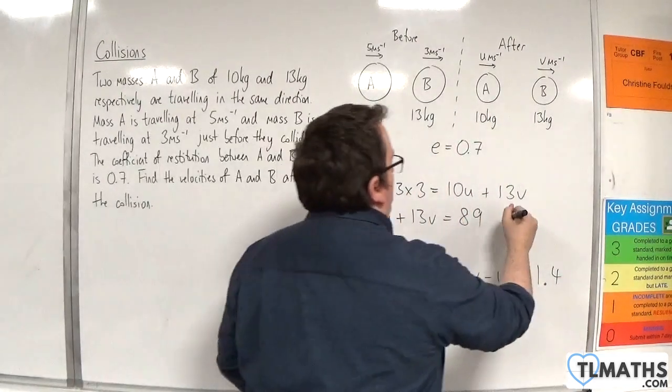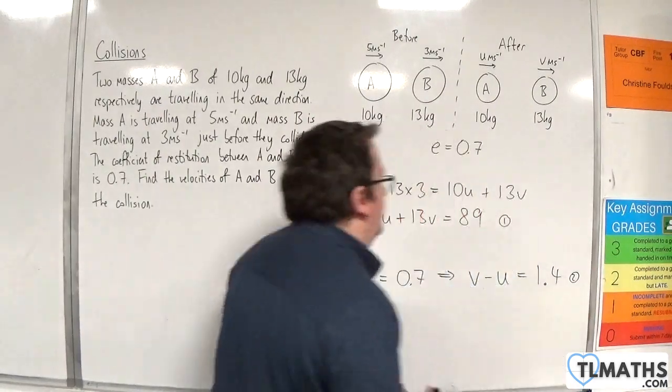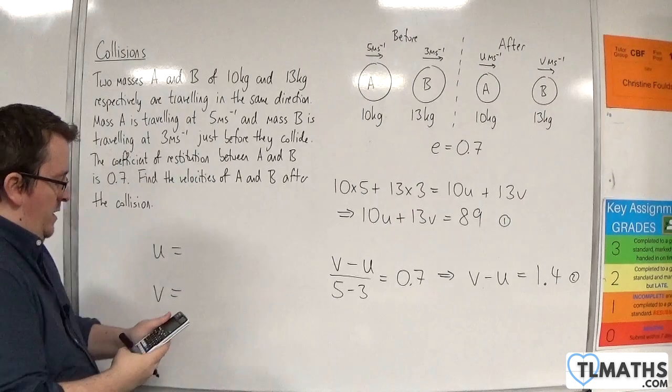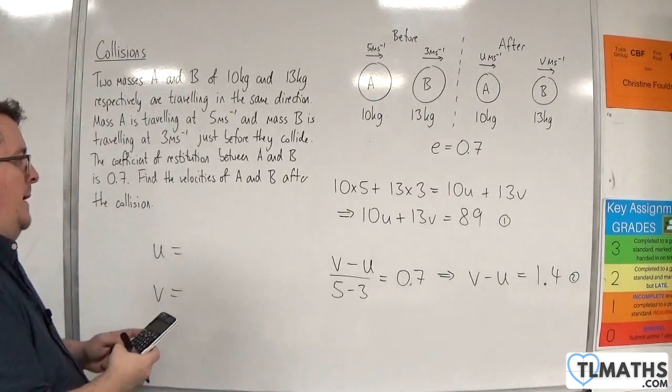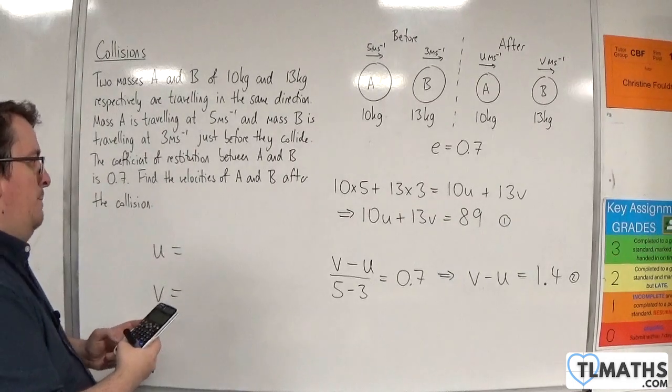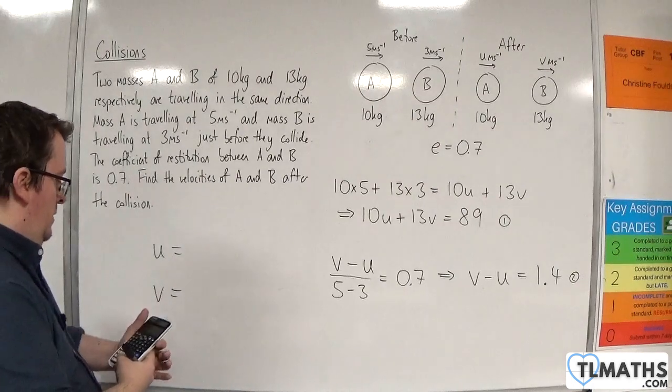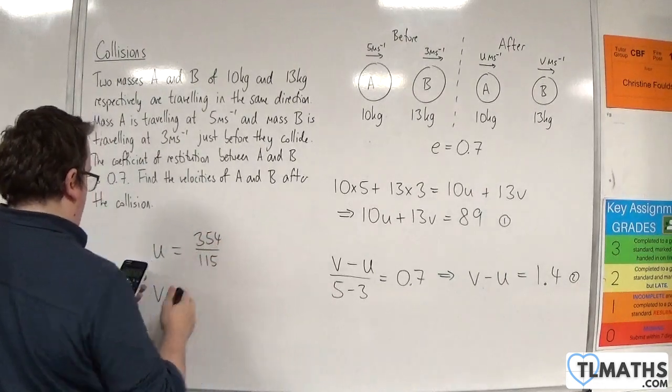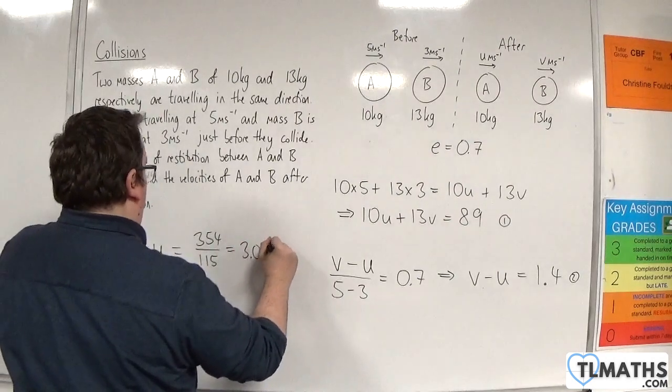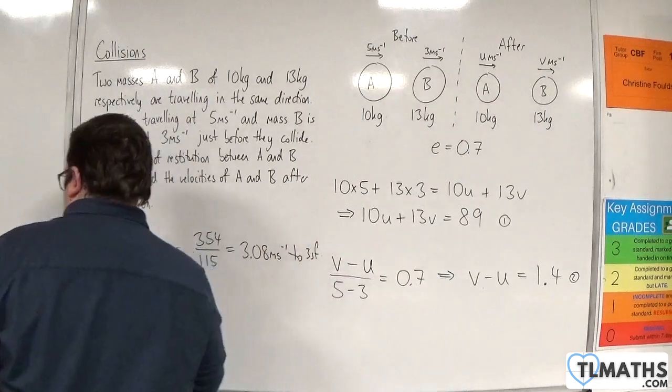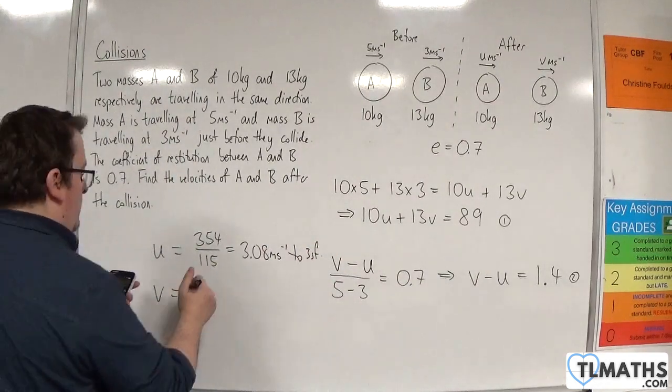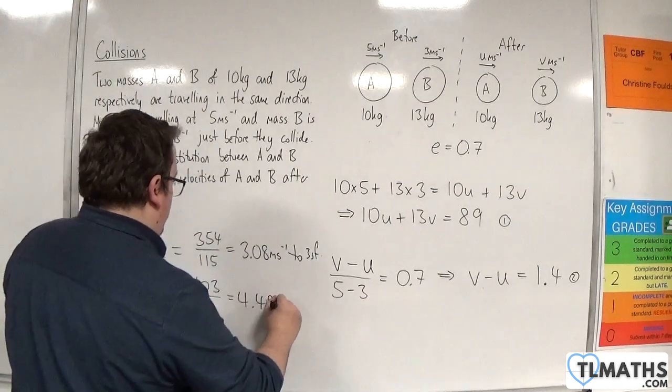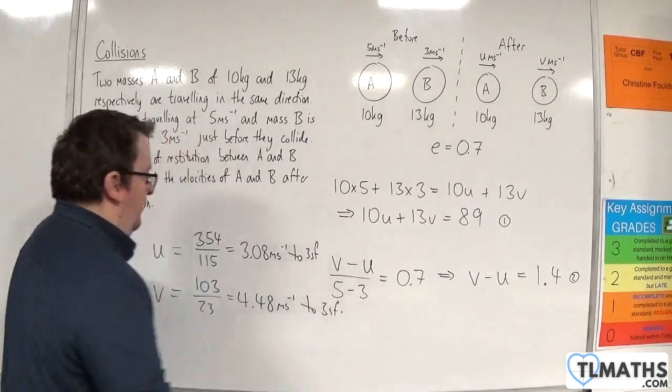So we now have two simultaneous equations where we can solve them. I'm just going to bundle them into my calculator and solve them that way. Menu, simultaneous equations, two unknowns. We've got 10, 13, and 89, and then we've got minus 1, 1, and 1.4. So we should get U as 354 over 115, which is 3.08 meters per second to 3 sig fig, and V is 103 over 23, which is 4.48 meters per second to 3 significant figures.